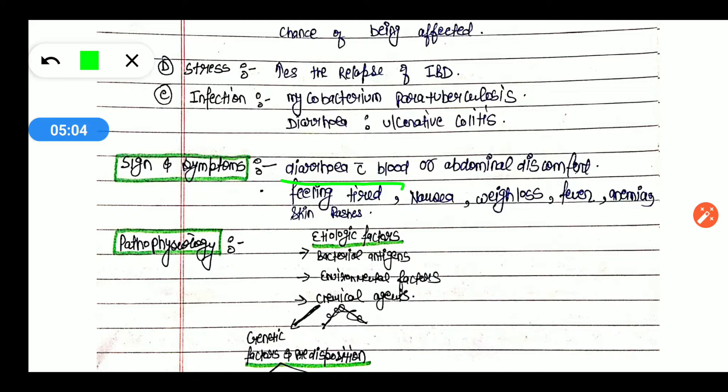Now let's talk about signs and symptoms. Diarrhea with blood and abdominal discomfort - there will be more blood in the diarrhea. And abdominal discomfort, feeling tired, nausea, weight loss, fever - so these are the signs and symptoms of IBD.